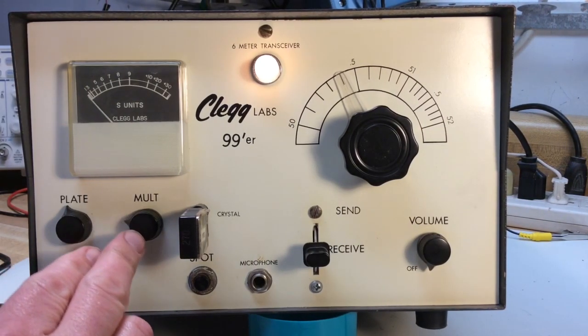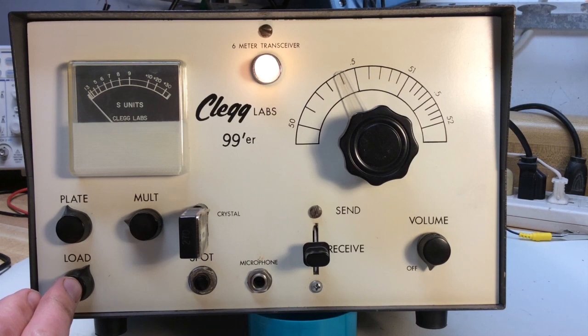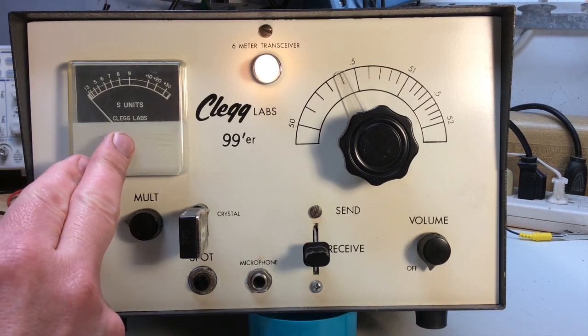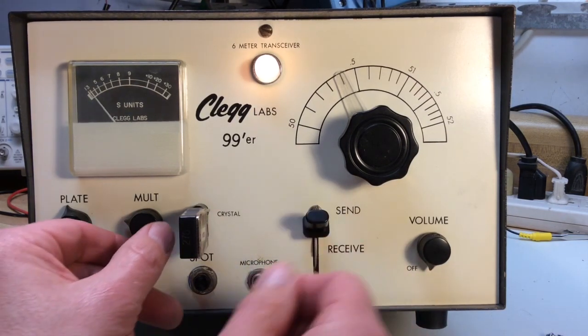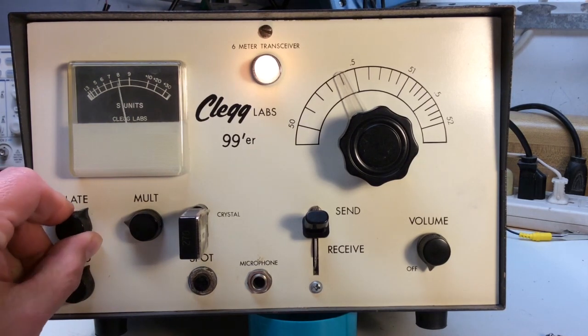Now let's move on to the transmit side. To adjust the transmitter, we need to use the multiplier and the plate and the load controls in that order and peak the power for maximum indication on the meter. So we'll go ahead and turn the radio into the send position for transmit and we'll peak our controls.